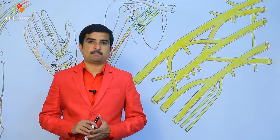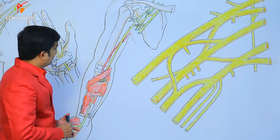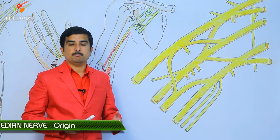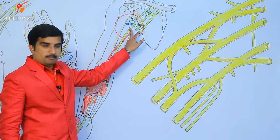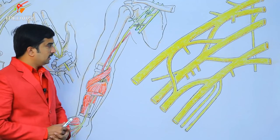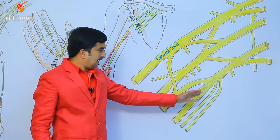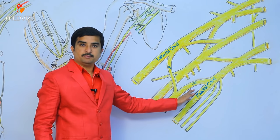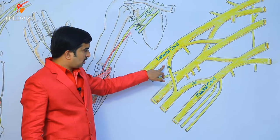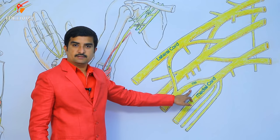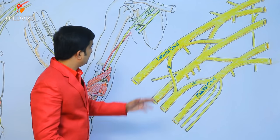The root value of the median nerve is C5 to T1, meaning all roots of the brachial plexus are involved in its formation. The median nerve arises in the axilla by two roots: the lateral root arises from the lateral cord, and the medial root arises from the medial cord of the brachial plexus.